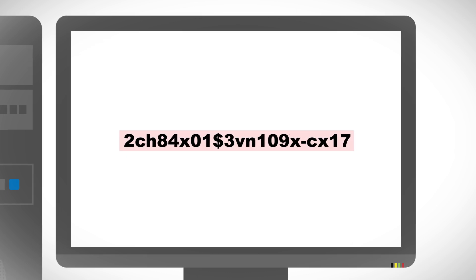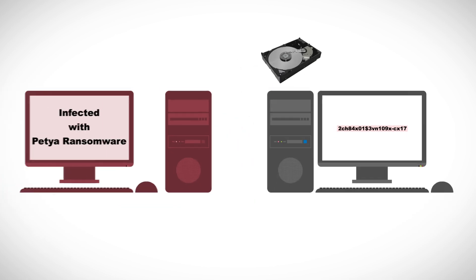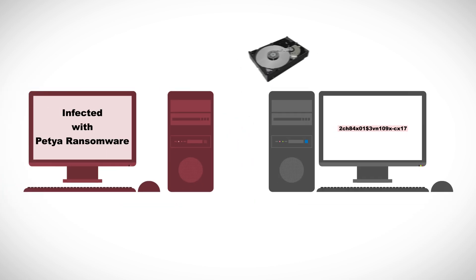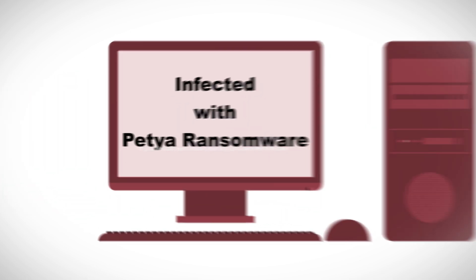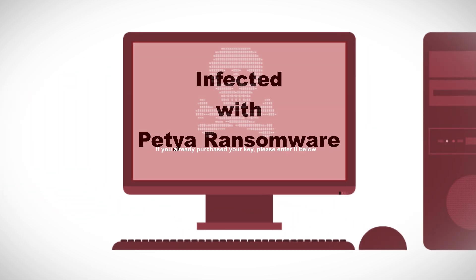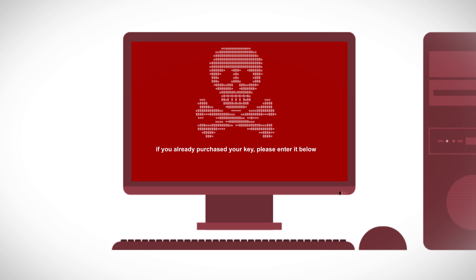Copy that key somewhere safe and mount the hard drive back on the infected computer. Turn the power on, and when you see the Petya Ransomware boot-up screen, simply put that key in the appropriate field and the decryption process should start.